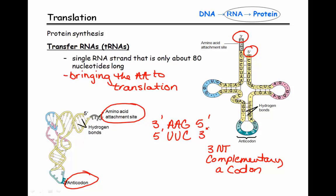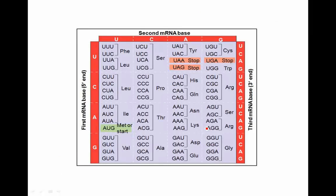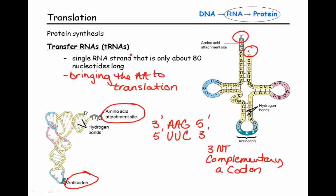Keeping in mind that the codon is UUC, if we go to the genetic code table and look for UUC, that codon codes for phenylalanine, which is PHE. Since we know that's the amino acid corresponding to UUC, that tells us the amino acid attached at the other end is PHE. There will be only one specific amino acid that can be attached to any particular tRNA.